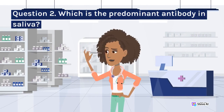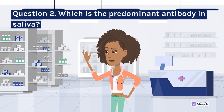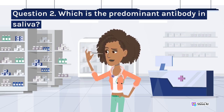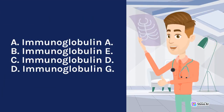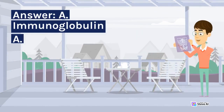Question 2. Which is the predominant antibody in saliva? A. Immunoglobulin A. B. Immunoglobulin E. C. Immunoglobulin D. D. Immunoglobulin G. Answer: A. Immunoglobulin A.